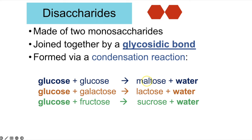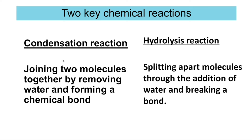When monosaccharides join together it's a condensation reaction — two molecules join together, a bond forms, and water is removed. Hydrolysis is the opposite: molecules are split apart by the addition of water, breaking a chemical bond. These two reactions are responsible for creating all polymers and hydrolyzing polymers back into their monomers.